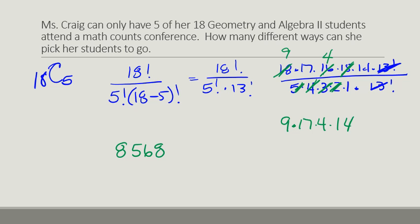And again, there's the combination button on the calculators. You would just type in 18, that combination, and then 5 at a time, and you would get that same answer.